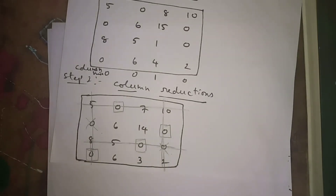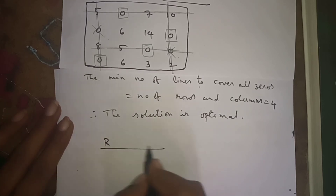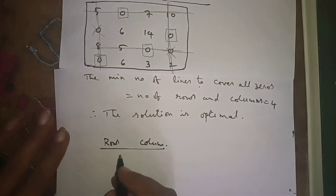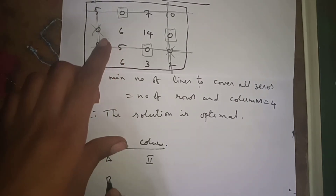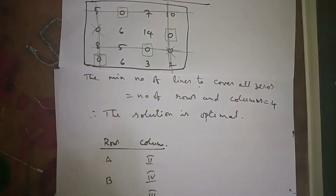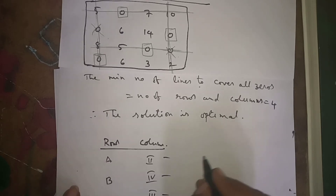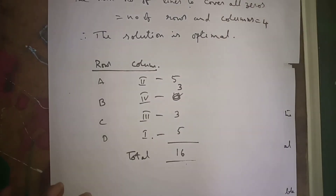We draw the boxes such that there is only one box in each row and each column. First row: column A (second column). Second row: column D (fourth column). Third row: column C (third column). Fourth row: column B (first column). The values from the original problem are: A = 5, B = 18 (fourth), C = 3 (third), D = 5 (first). Adding all values gives the answer.